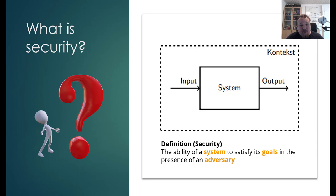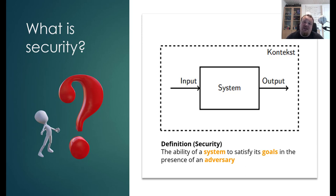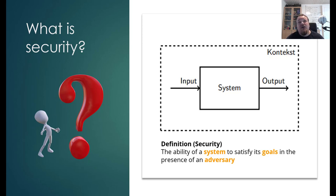Take a web page as the system — the ability of the web page to certify its goals. Let's say it's a website that sells toilet paper; the goal is to sell a lot of toilet paper. How do we make sure the website isn't broken in any way? The input would be users providing data — credit card information, or potentially malicious input. The output is what the system returns, like a receipt. The context here is that the web page is on the World Wide Web, which is the most exposed channel in the world.